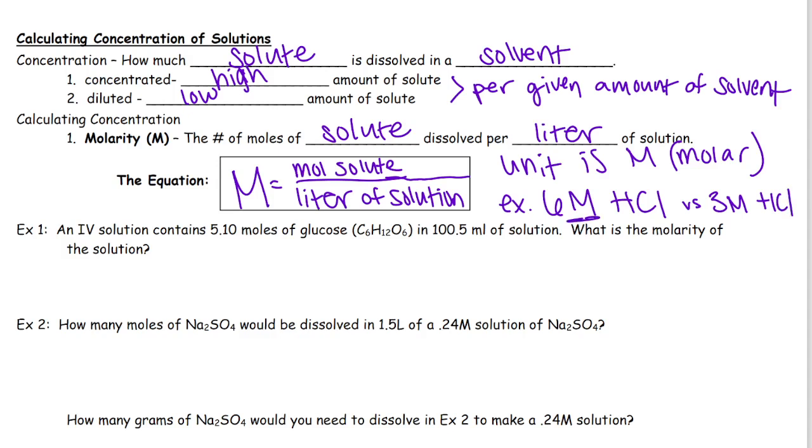So the question for example 1 says, an IV solution contains 5.10 moles of glucose in 100.5 milliliters of solution. What is the molarity of the solution? So we need to first of all keep in mind that this was given to us in moles and this was given to us in milliliters, but my equation uses moles in liters, so it's moles per liter. So I need to convert milliliters to liters first. So I will be using the equation that M equals moles per liter.